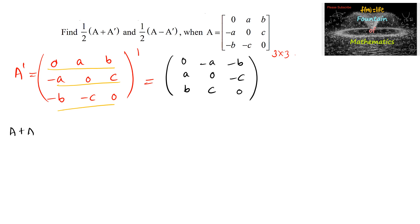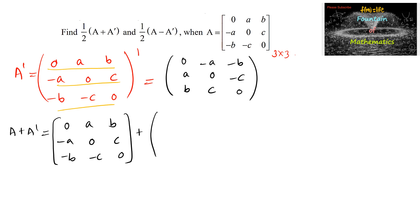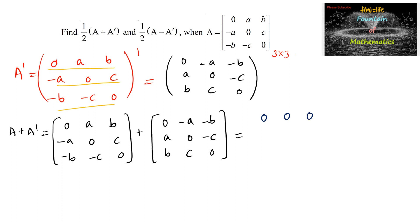Now, A plus Aᵀ is equal to the matrix A (with entries 0, A, B; negative A, 0, C; negative B, negative C, 0) plus Aᵀ (with entries 0, negative A, negative B; A, 0, negative C; B, C, 0). Adding these: 0+0=0, A+(−A)=0, B+(−B)=0, (−A)+A=0, 0+0=0, C+(−C)=0, (−B)+B=0, (−C)+C=0, 0+0=0. So we get the 3×3 zero matrix.